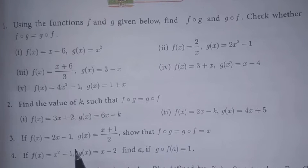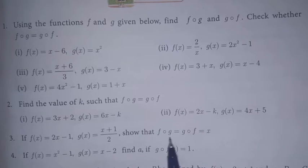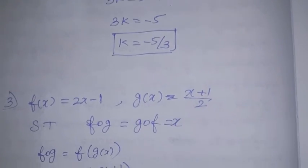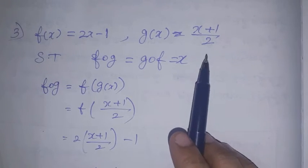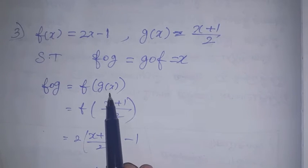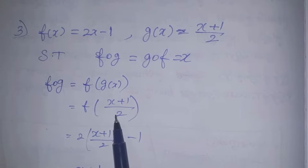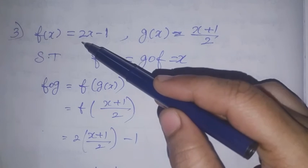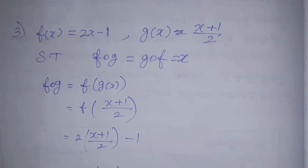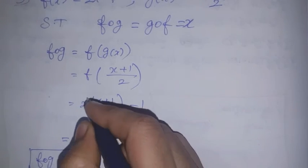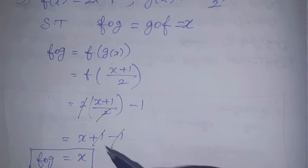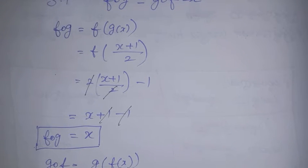Third sum: if f(x) = 2x - 1 and g(x) = (x + 1)/2, show that f∘g = g∘f = x. First, f∘g = f of g(x) = f((x+1)/2). Substituting into f(x) = 2x - 1: 2 × ((x+1)/2) - 1. The 2s cancel, leaving x + 1 - 1. The +1 and -1 cancel, so f∘g = x.